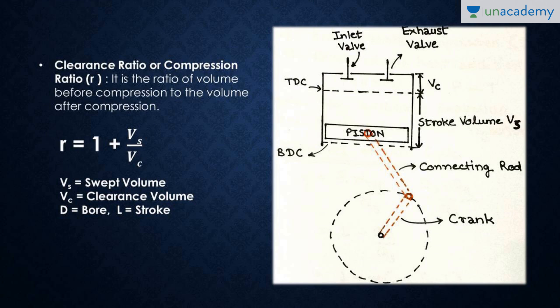To summarize: TDC is when the piston is at the top, BDC is when the piston is at the bottom, the distance between TDC and BDC is the stroke length, and the left-out volume in the cylinder is the clearance volume. Keep these in mind as you will face them in numericals. Thanks a lot — this is Harshit Agarwal.